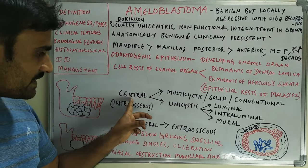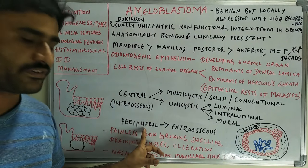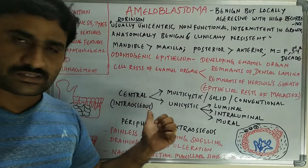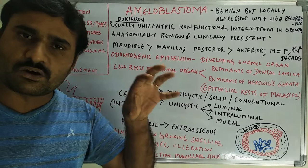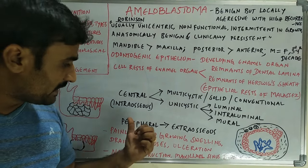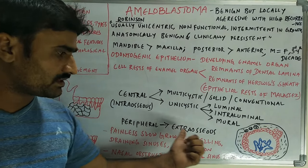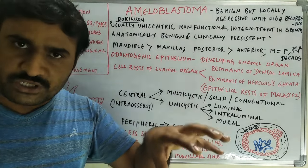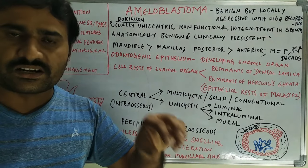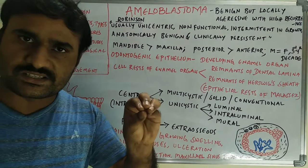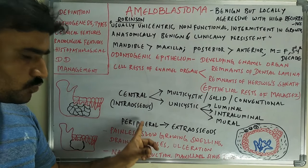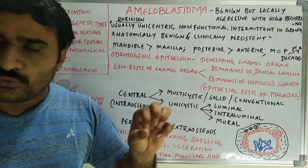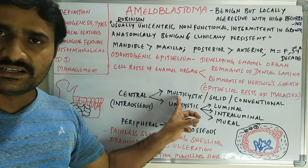Amyloblastoma is basically divided into central and peripheral varieties. Central is intraosseous — it develops within the bone. Peripheral is extraosseous — it develops in the surrounding soft tissues, mostly the gum tissue. In the central variety we have multicystic and unicystic subtypes.